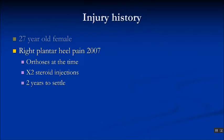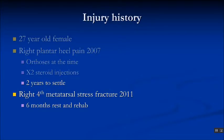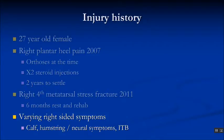This is a 27-year-old female who in 2007 had plantar heel pain. She received orthoses at the time, had two steroid injections, and it took two years to settle. She subsequently had a stress fracture of the fourth metatarsal in 2011 which took six months of rest and rehab. Since that time she has had various right-sided problems including the calf, hamstring with neural symptoms, and the ITB.